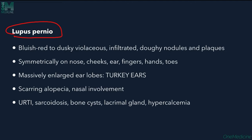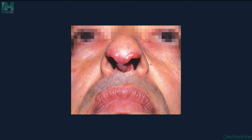Lupus pernio is an important lesion of sarcoidosis — bluish-red, dusky violaceous infiltrated, doughy nodules and plaques seen symmetrically on the nose, cheeks, ears, fingers, hands, and toes. Massive ear enlargement is called 'turkey ears.' Scalp involvement causes scarring alopecia. Nasal involvement, upper respiratory tract, bone cysts, lacrimal gland, and hypercalcemia can also be seen.